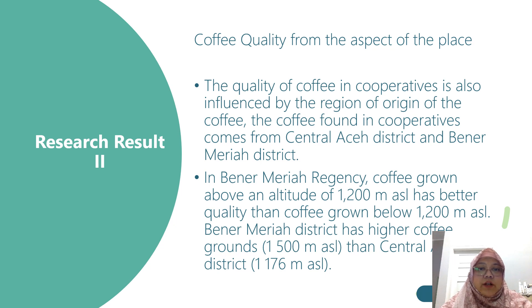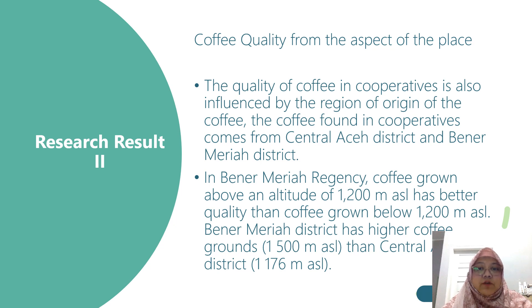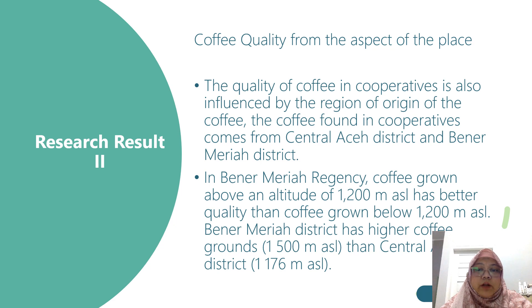Research result 2: Coffee quality by place. The quality of the coffee in cooperatives is also influenced by the origin of the coffee. Coffee found in cooperatives comes from Central Aceh District and Bener Meriah District. In Bener Meriah Regency, coffee grown above an altitude of 1,200 meters above sea level has better quality than coffee grown below 1,200 meters above sea level. Bener Meriah District has higher coffee grounds at 1,500 meters above sea level than Central Aceh District at 1,176 meters above sea level.